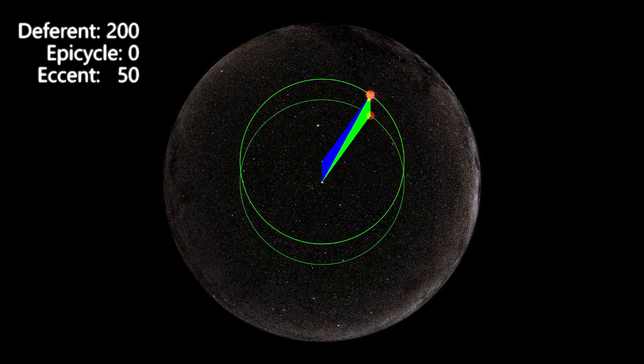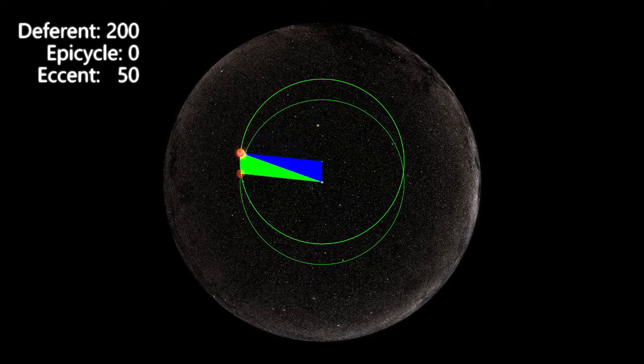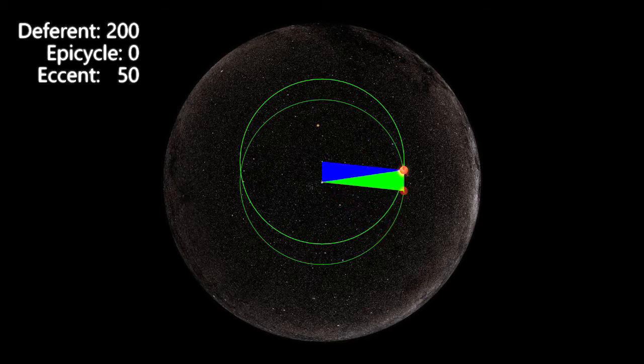This eccentric offset, or eccentricity, produces an observable anomaly between the planet's actual position on its eccentric circle and its mean position, as envisioned travelling the same angular distance around a circle concentric with the Earth.